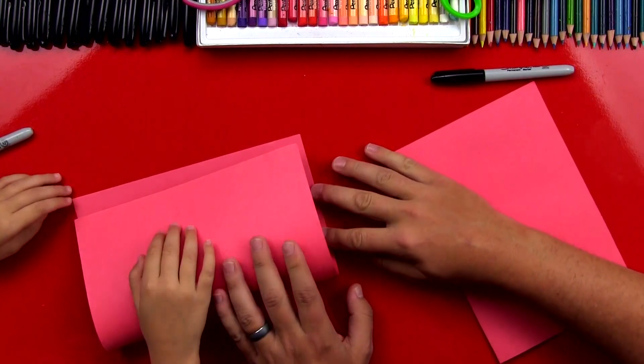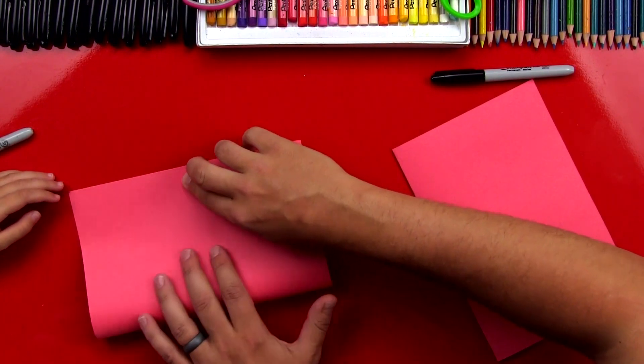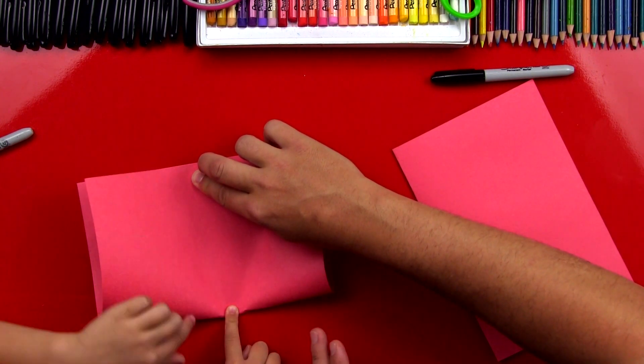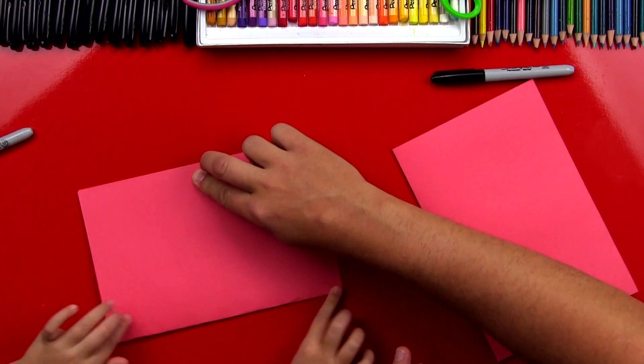Let's first fold our paper in half. We're going to fold our construction paper in half. Line it up. Line up the edge, and then you press down the middle. And all the way out to the sides. Perfect.